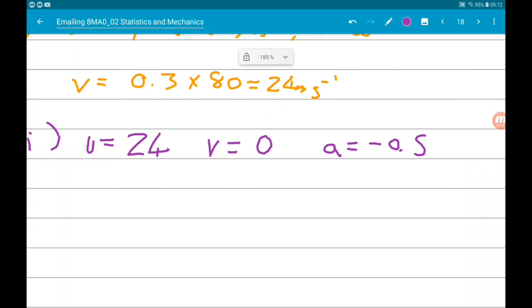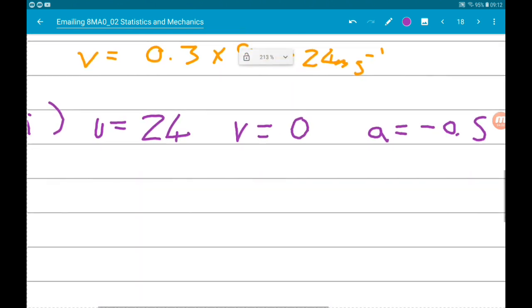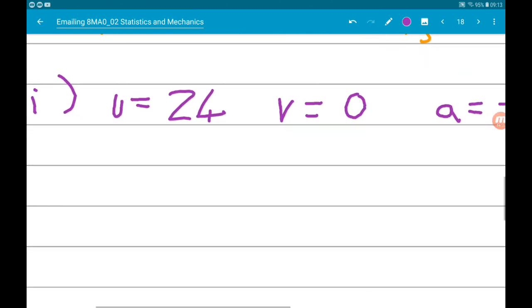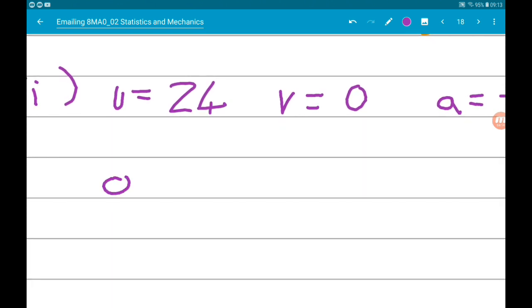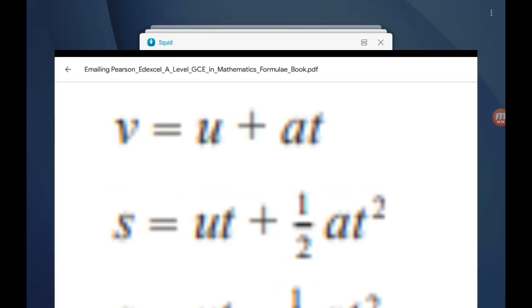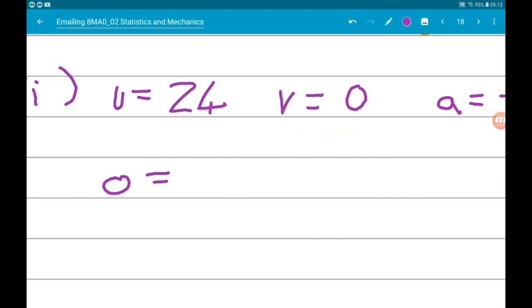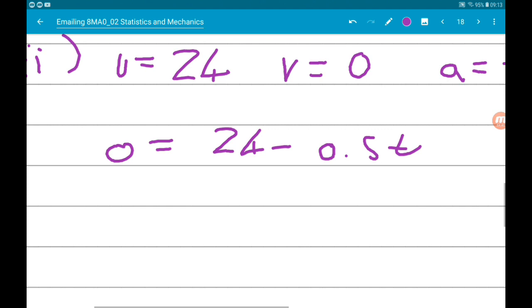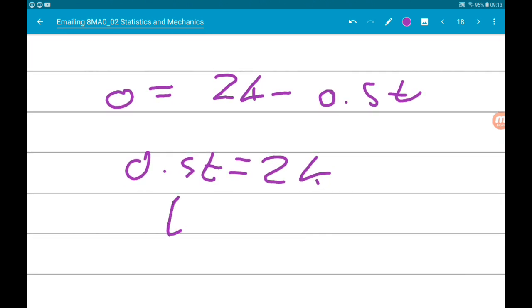So again, using the same SUVAT equation, we get zero is equal to u plus at. So zero is equal to 24 minus 0.5t. So if we add the t term, 0.5t is equal to 24. So t times by 2, t is 48.